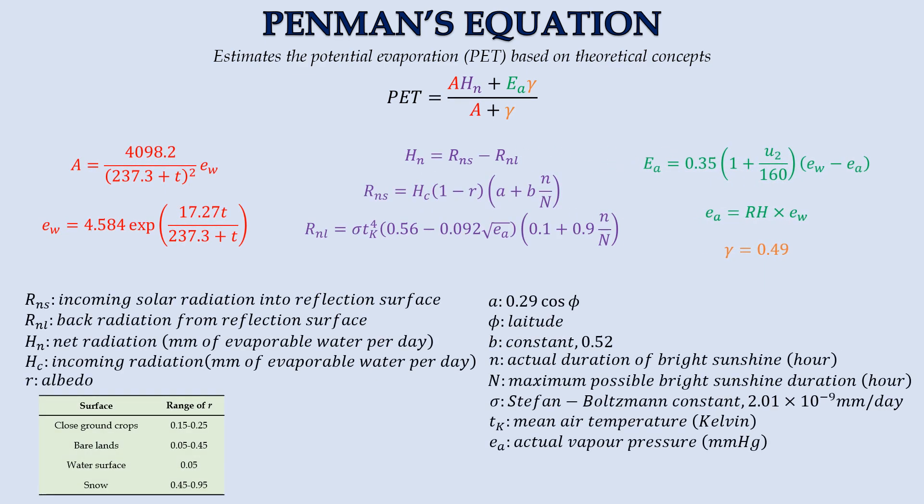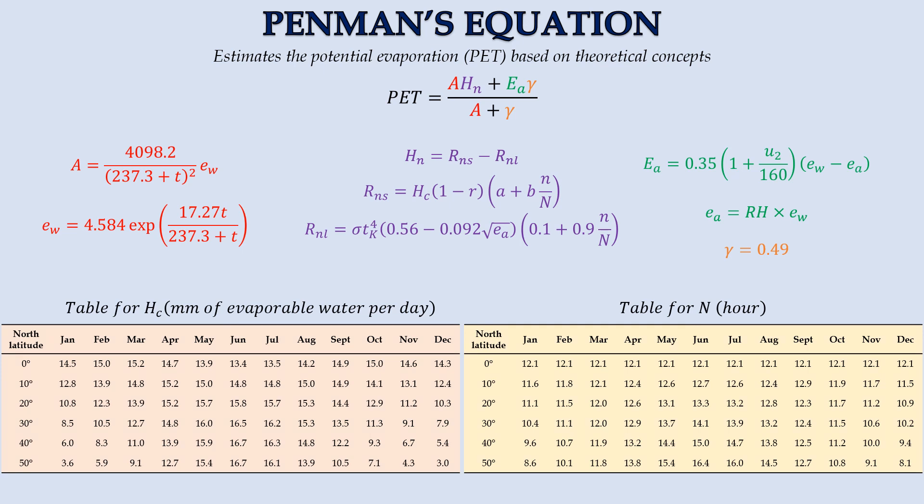Hn is defined as net radiation in the unit of mm of evaporable water per day. It is the difference between incoming solar radiation into a surface of reflection and back radiation from that surface. The incoming radiation is a function of the site's latitude and the period of year we study. The albedo varies with the types of surface. The back radiation is affected by the air temperature and vapor pressure. Overall, the duration of bright sunshine dictates how much radiation a region can receive. When determining Hn, the following tables can be used to aid us in approximating the solar radiation and possible sunshine hours.